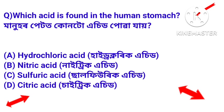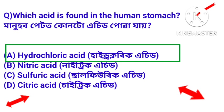Next question: which acid is found in the human stomach? Manuhar petot kuntu acid puasai? Answer: Hydrochloric acid. Hydrochloric acid is present in the human stomach.